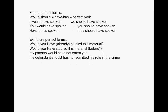Future perfect form: would or should plus have plus verb in perfect form. I would have spoken, you would have spoken, he or she would have spoken, we would have spoken, you should have spoken, they should have spoken. He or she should have spoken, or would have spoken.